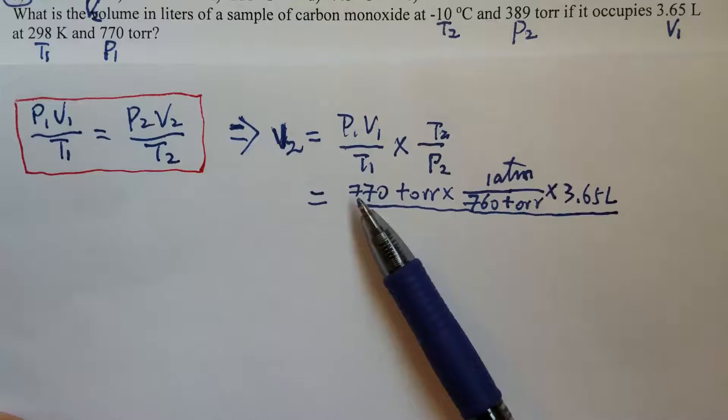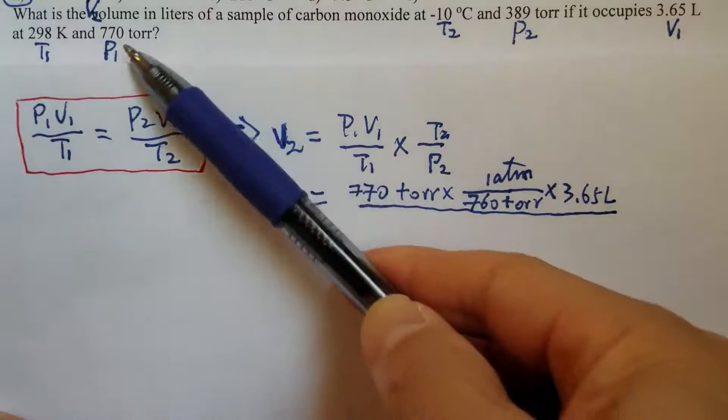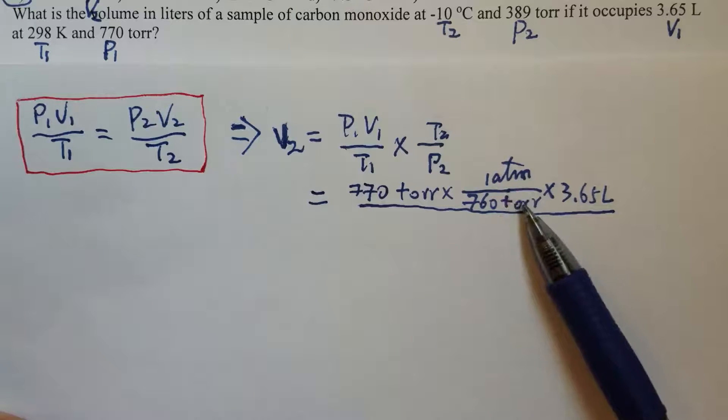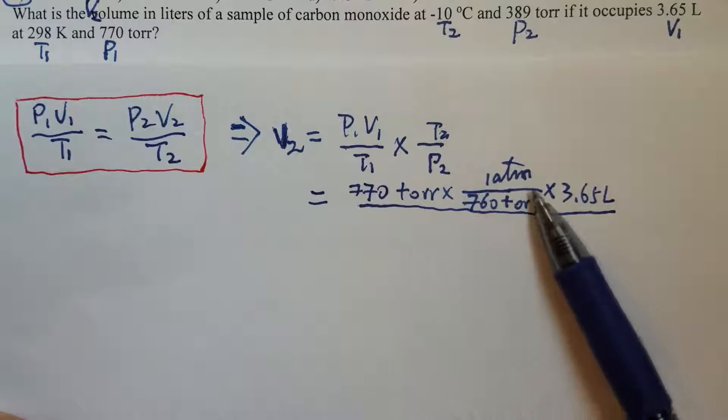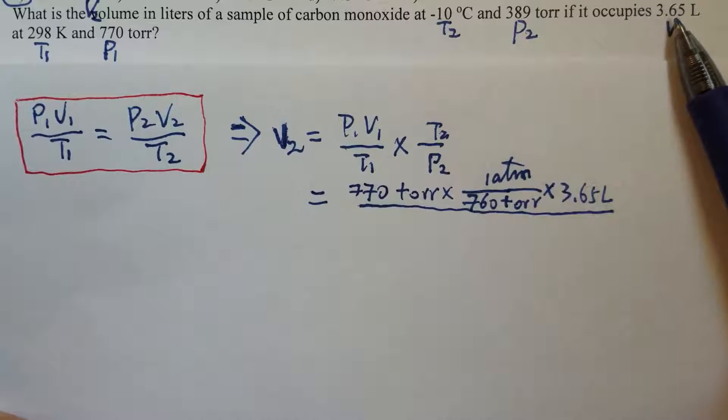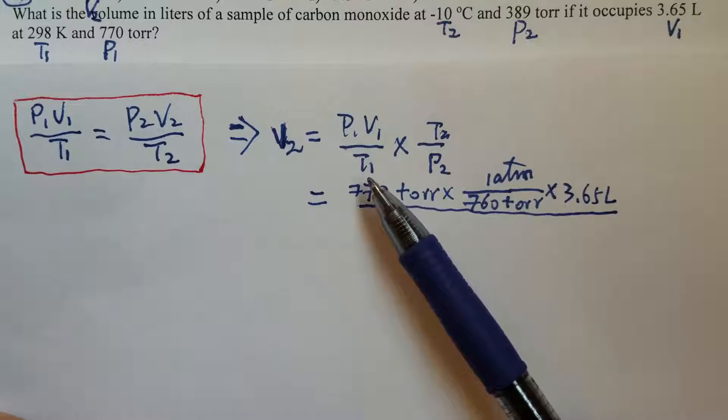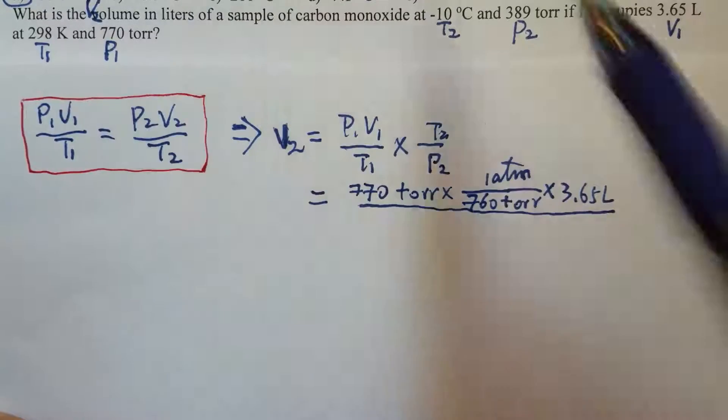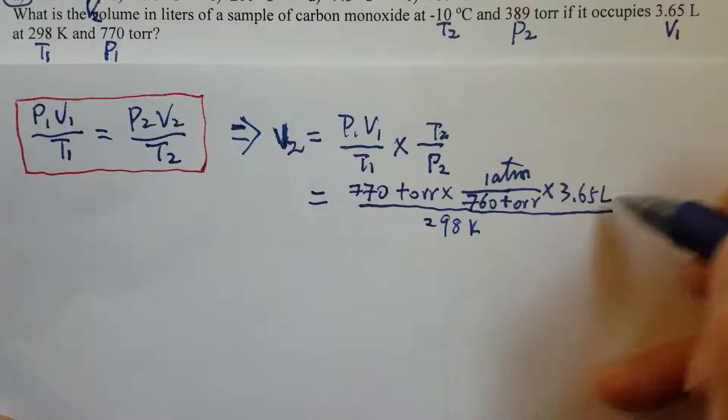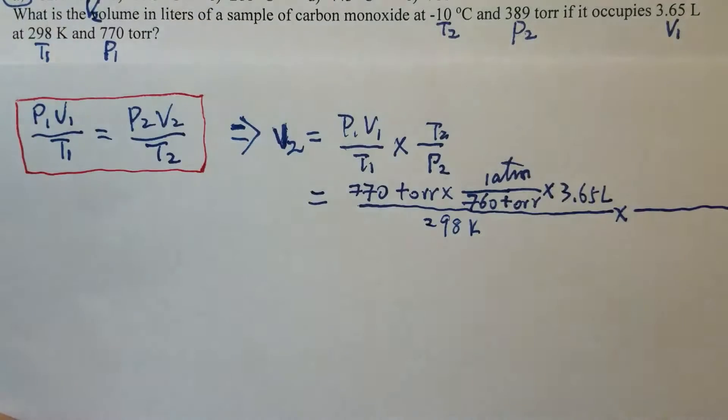So, V2 equals P1, that's 770 Torr, and convert that to atmosphere. So, then this is P1, and then times V1, 3.65 liters. Okay, then divided by T1, T1, right here, 298 K, then we need to work on T2.